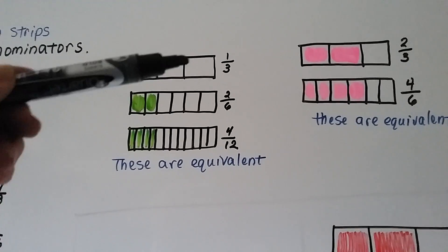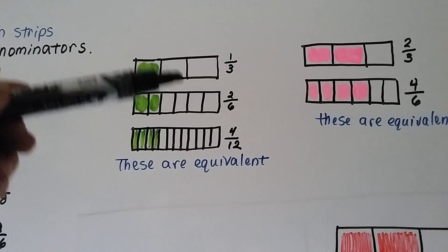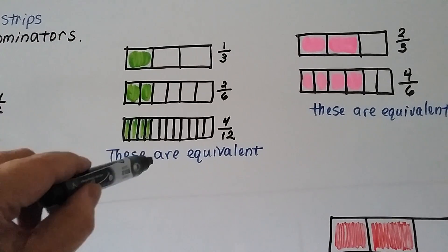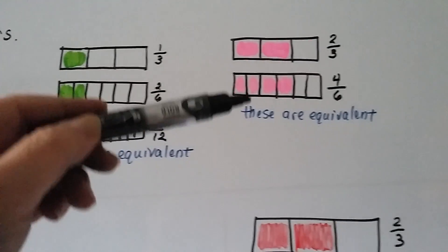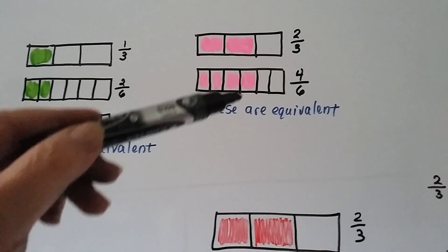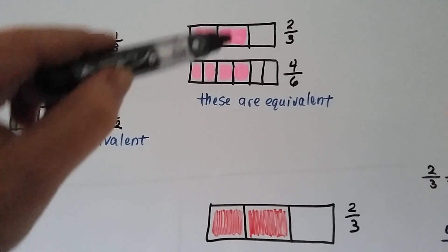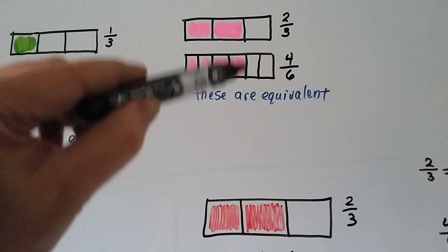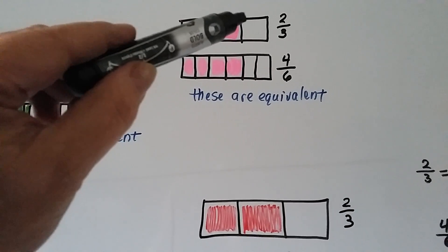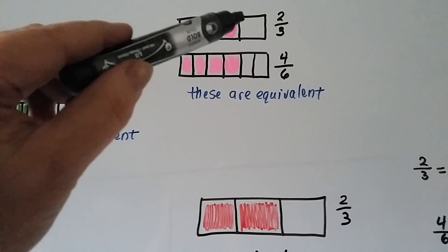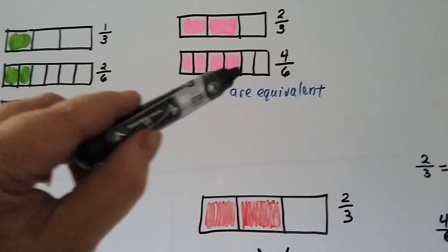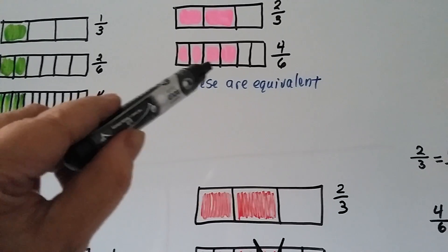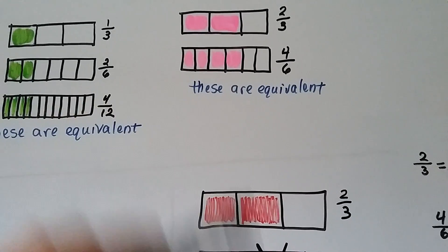Just lining up the different fraction bars we can see where they meet — they all line up on that line. Two-thirds is the same thing as four-sixths; we can see they line up right here.